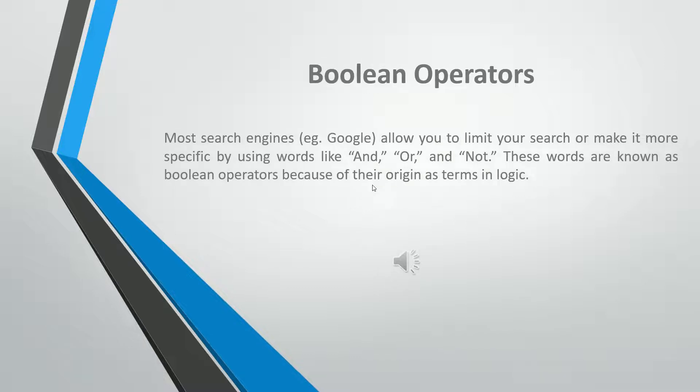Most search engines, e.g. Google, allow you to limit your search or make it more specific by using words like AND, OR, and NOT. These words are known as Boolean operators because of their origin as terms in logic.